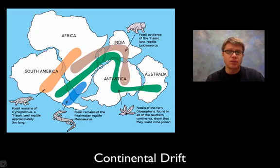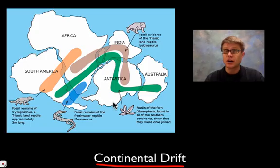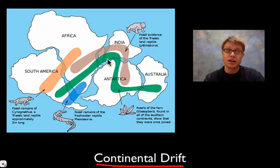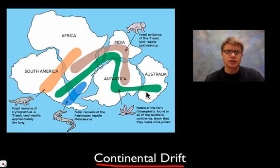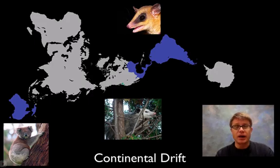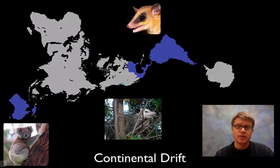But there have also been global changes not caused by humans. One great example is continental drift. All continents used to be organized into one supercontinent called Pangaea, which broke apart into two subcontinents: Gondwana in the south and Laurasia in the north. Scientists figured this out by looking at fossils — not only did the continents fit together, but fossils were found across all of them. That drifting caused biogeographical changes, or changes in the life living on those continents.